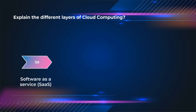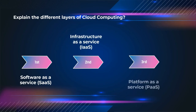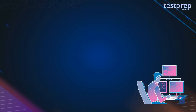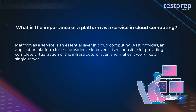Second, Infrastructure as a Service — provides infrastructure for hardware. Third, Platform as a Service — provides a cloud application platform for developers. Question 36: What is the importance of Platform as a Service in cloud computing? PaaS is an essential layer in cloud computing as it provides an application platform for providers. It is responsible for providing complete virtualization of the infrastructure layer and makes it work like a single server.